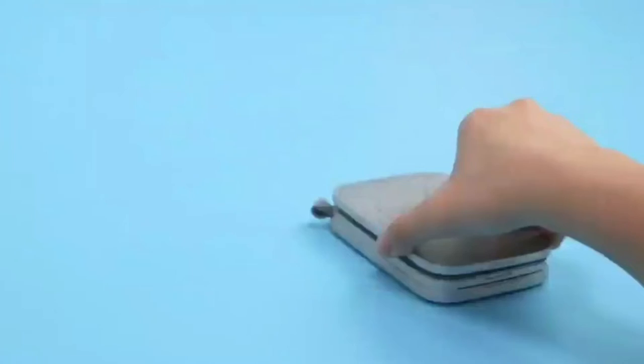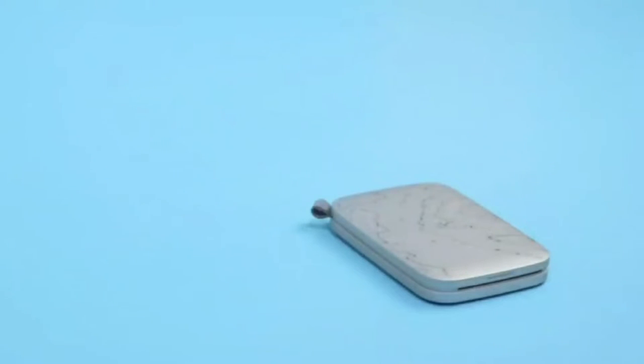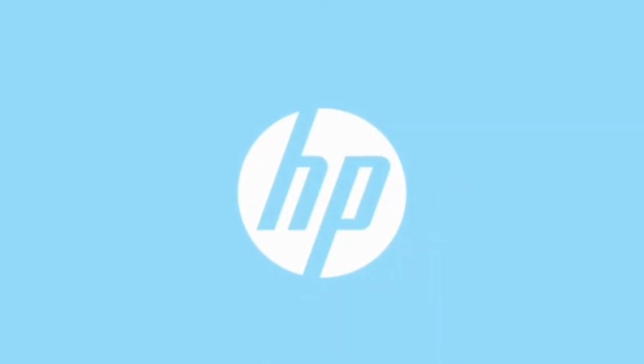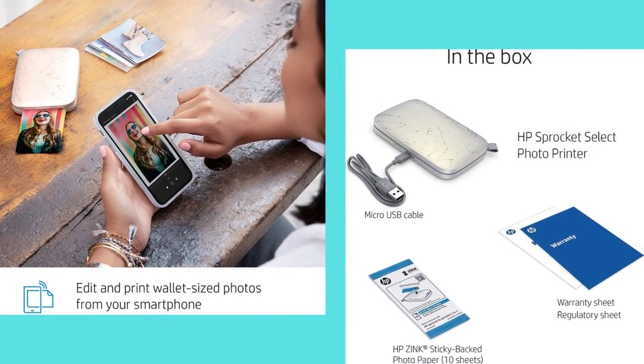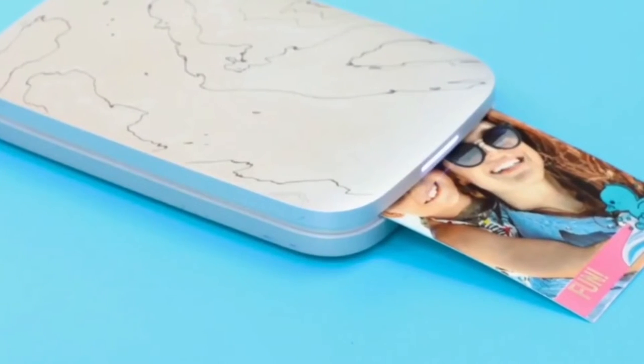This thin portable photo printer is designed to match your style and go virtually anywhere. Use the HP Sprocket app to unlock content in augmented reality and view shared print queues, hidden videos and more.